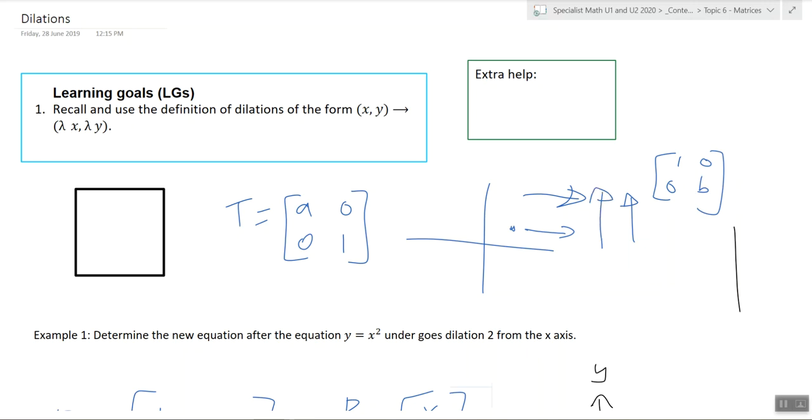There you have it. That's a transformation matrix dilation, transforming images, lines, points, whatever you want using that matrix.